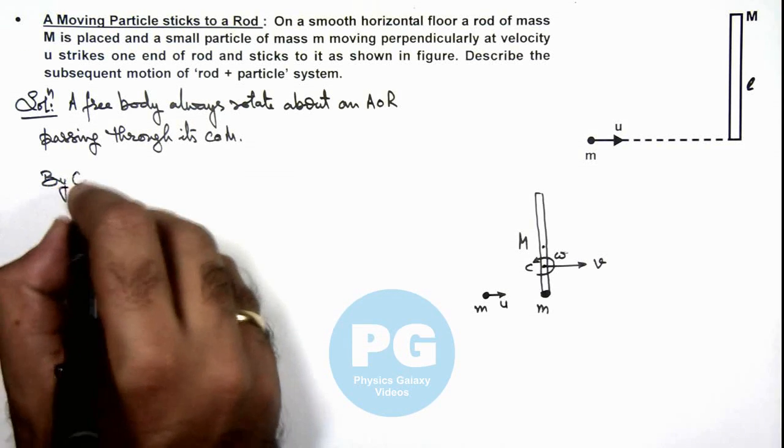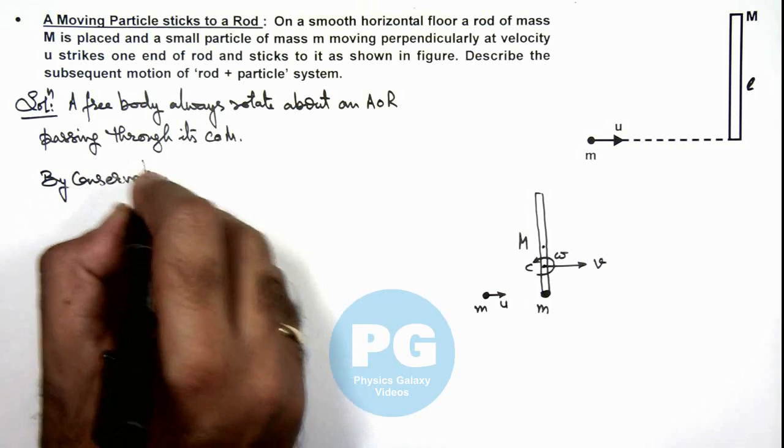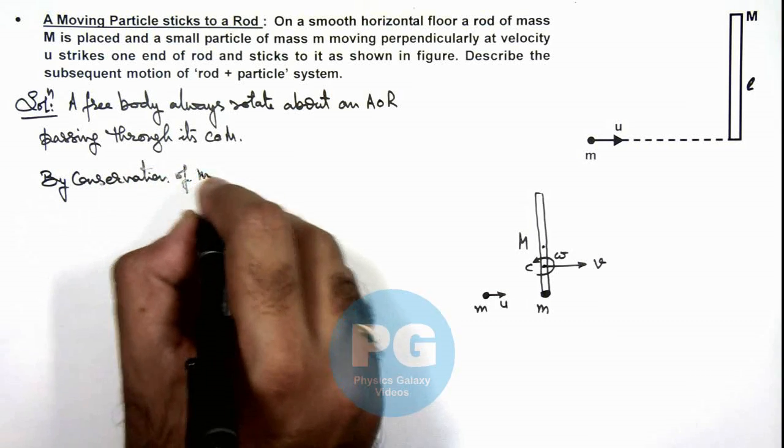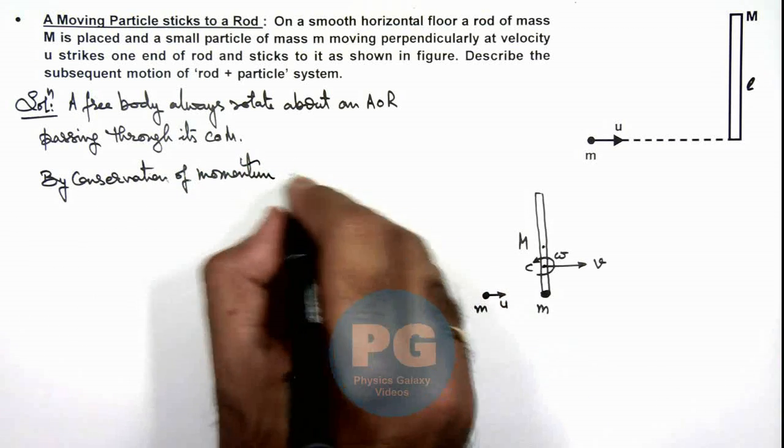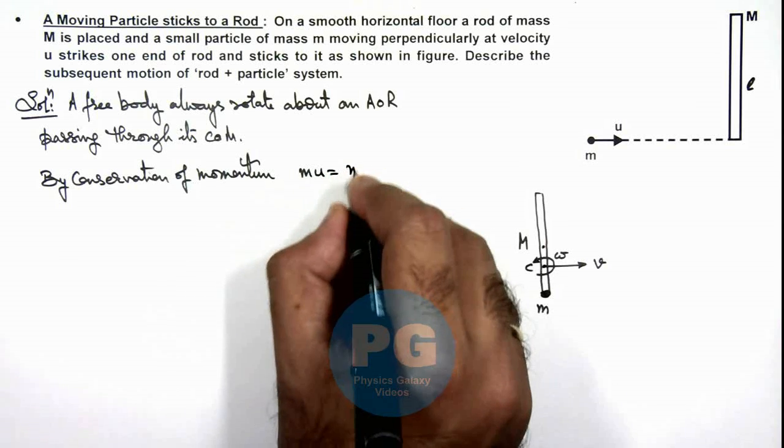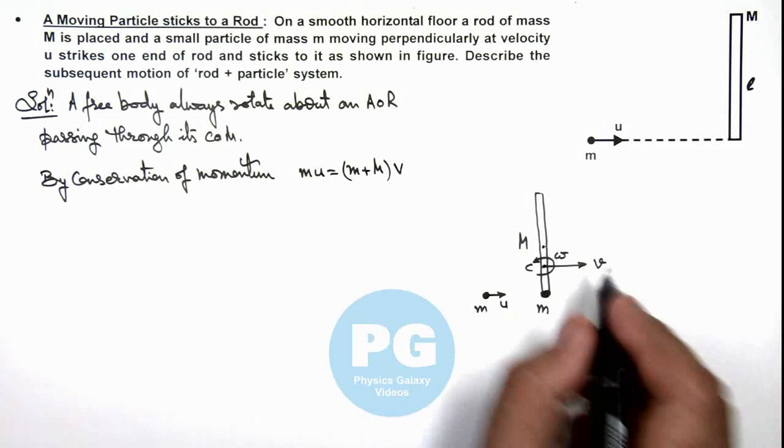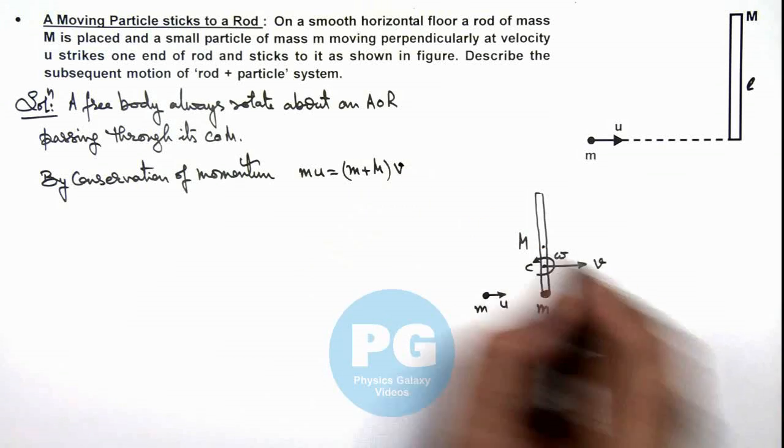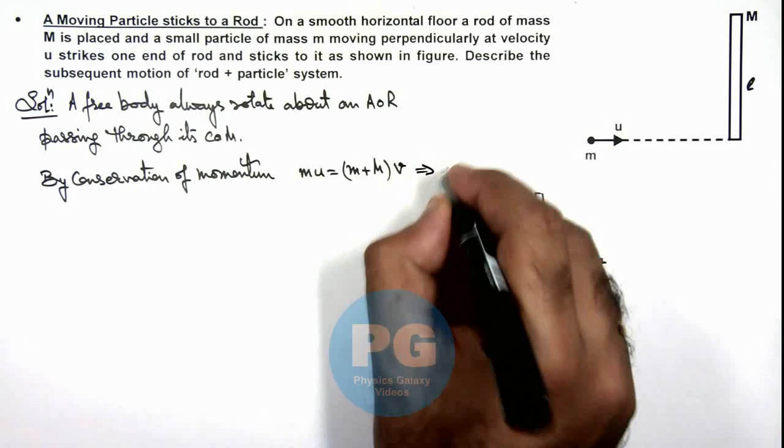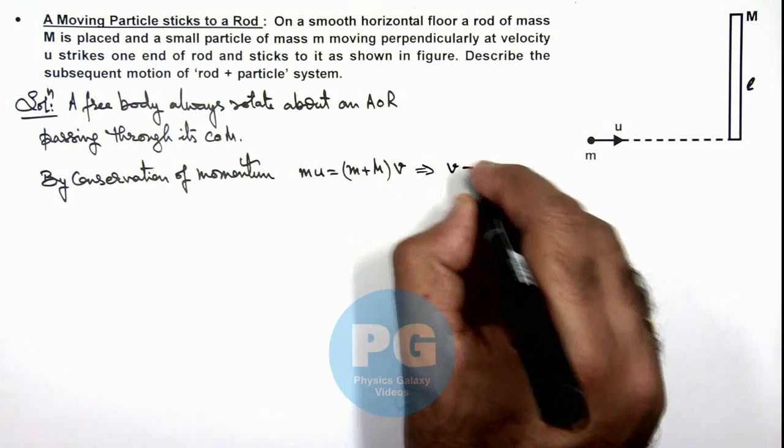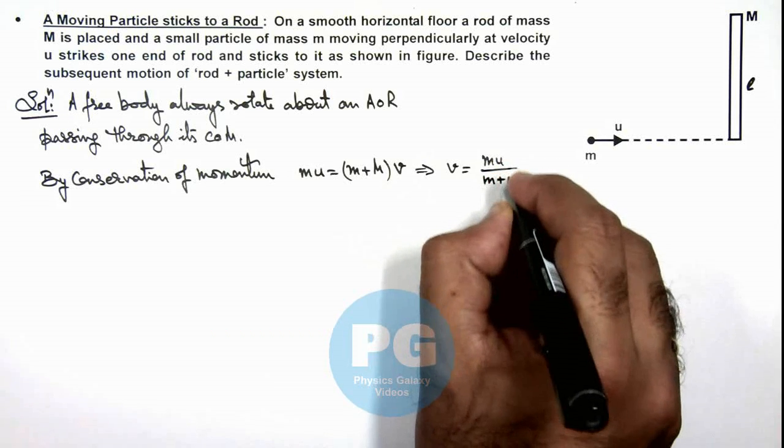By conservation of momentum, we can write: mu equals (m + M) multiplied by v, which is the speed with which the center of mass is moving. So this gives us the velocity of center of mass: v = mu/(m+M).